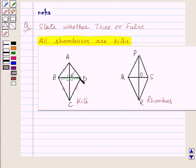Also one pair of opposite angles is equal. In this figure we have angle B is equal to angle D.